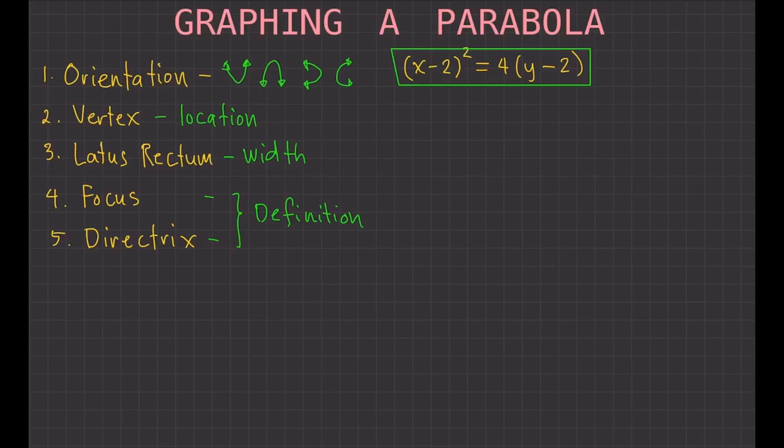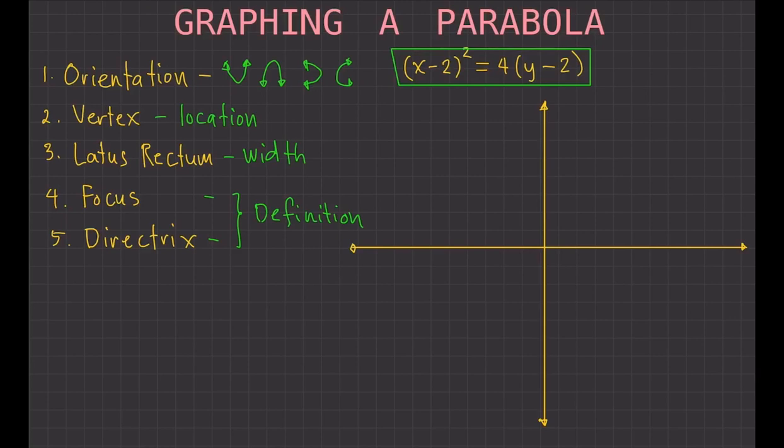The first thing we want to know is the orientation of the graph. The orientation is determined by two things. First, look at the variable that is being squared. If the variable being squared is x, then the orientation is up or down. If the variable being squared is y, then the orientation is left or right.